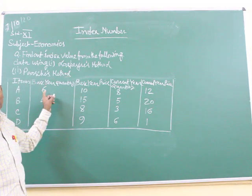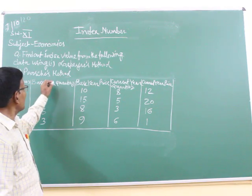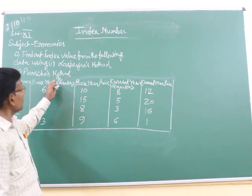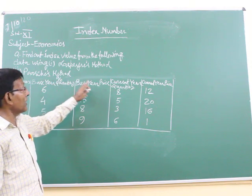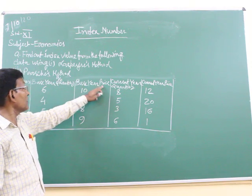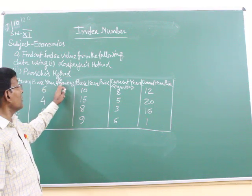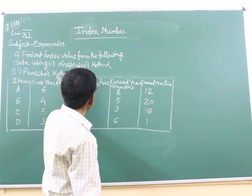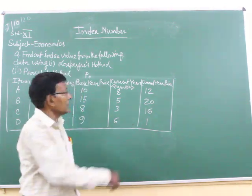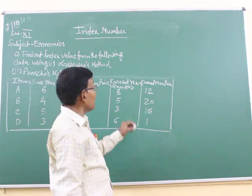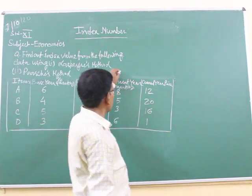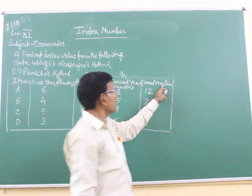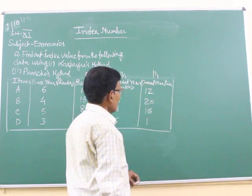Base year quantity - base year will be denoted with zero. As it is quantity, it should be denoted by Q. Quantity will be denoted by Q. Price will be denoted by P. If that quantity is related with base year, we have to put subscript zero. Base year price is P0. Current year quantity is Q1. Current year price is P1. In Laspeyres method, what is the formula?